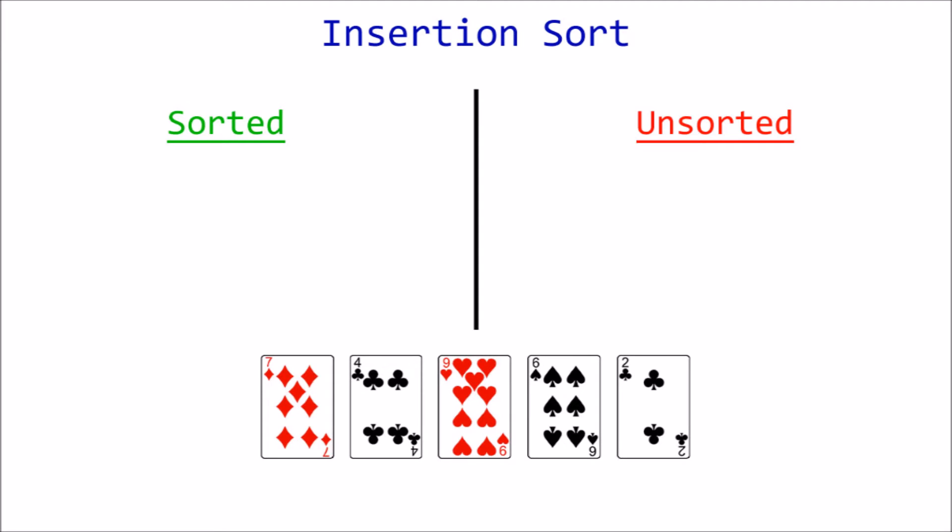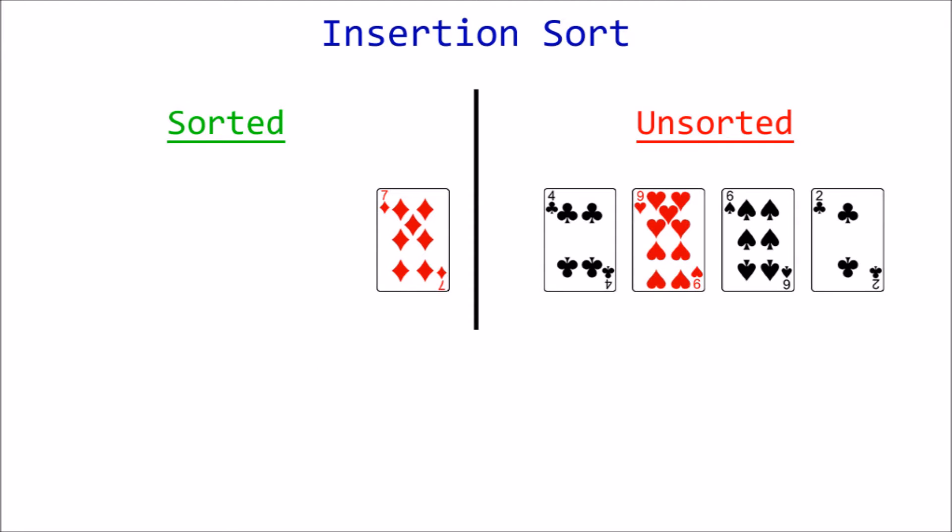But this time, the sorted section doesn't start out empty. The first item in the list is labeled as sorted, which is valid because a one-item list will always be sorted.